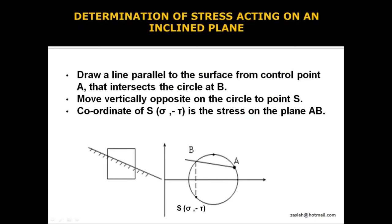Now let's introduce an important concept about the stress condition of an incline plane. After drawing Mohr's circle, if we want to determine the stress condition, that means normal and shear stress of a given inclined plane, we have to just draw a line parallel to that given plane at control point A. The stresses of the vertically opposite point S are the stresses of that incline given plane AB.